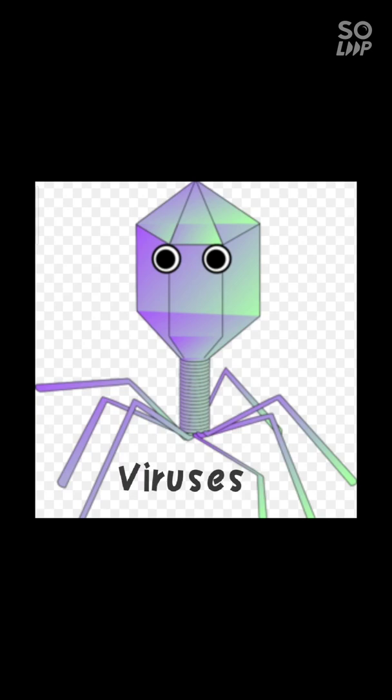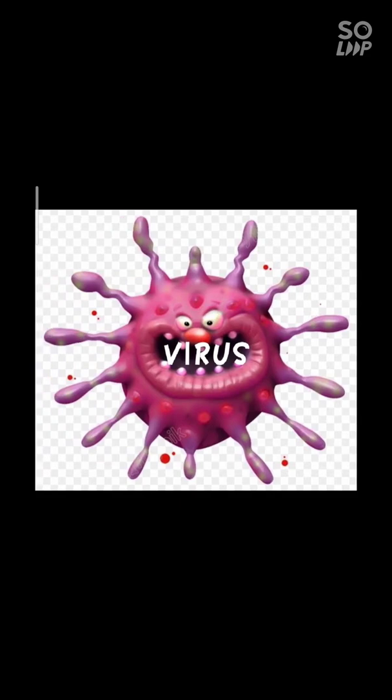Moving on to viruses. They are the smallest microorganisms, which can develop only inside the cells of host organisms, which may be an animal, a plant, or a bacterium. Viruses are much smaller than bacteria and do not show most of the characteristics of living things. They are able to reproduce only inside the cells of other organisms — animal cells, plant cells, or bacterial cells — which is why they are also known as a link between living and non-living.